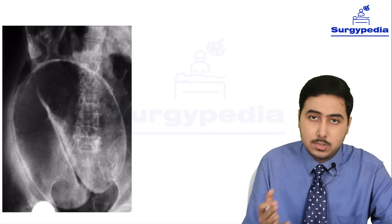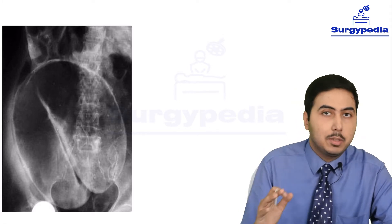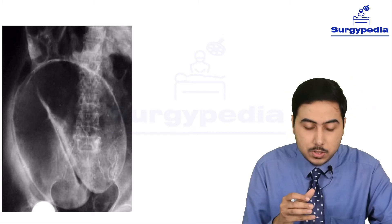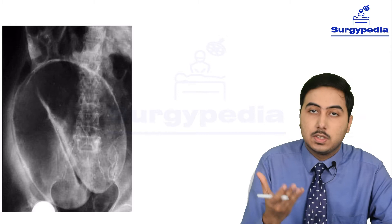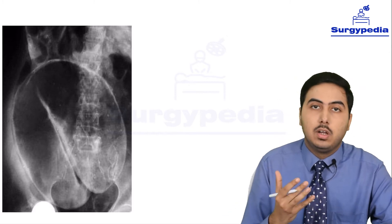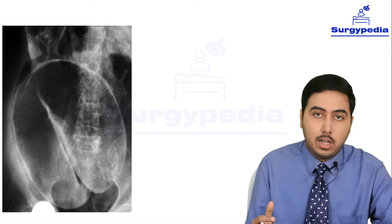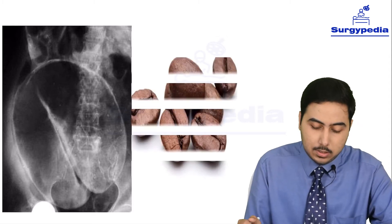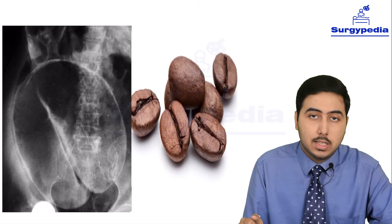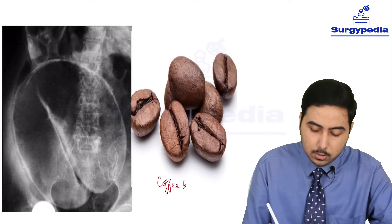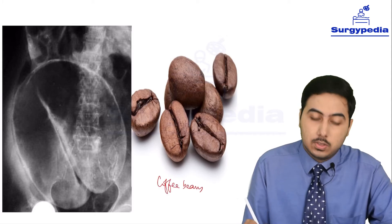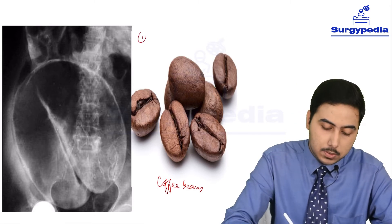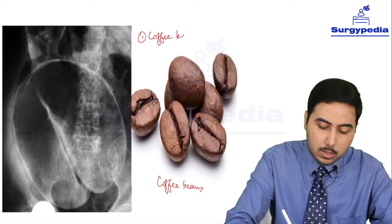Radiologists and pathologists are quite imaginative. When they see something in an X-ray or CT scan, they try to correlate it and find analogous things in real life to compare with. What do you think it looks like? It looks like coffee beans. So this is also known as coffee bean appearance. This is one appearance of this X-ray - coffee bean appearance.